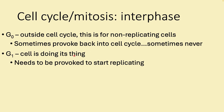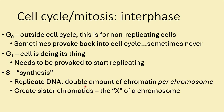Once cells start back into the cell cycle they begin in G1. G1 and G0 are effectively the same thing — it's just a matter of whether we're getting a signal to start replicating. If we get a signal to replicate, the next step is S phase, or synthesis, where we replicate our DNA. We double the amount of chromatin per chromosome and create structures called sister chromatids.